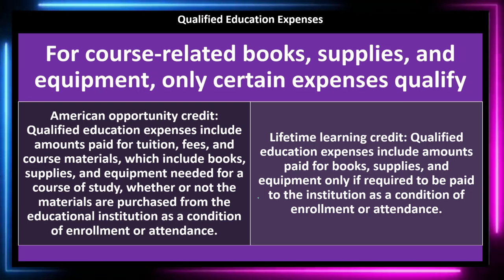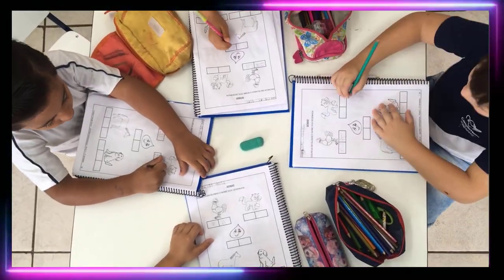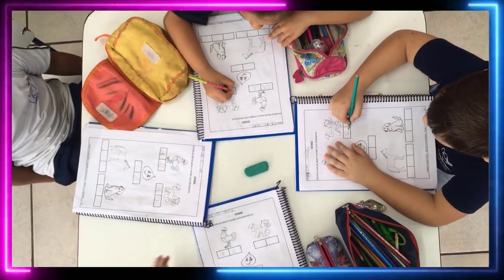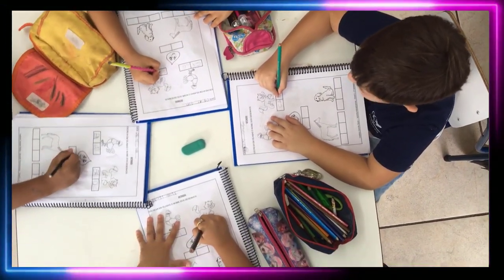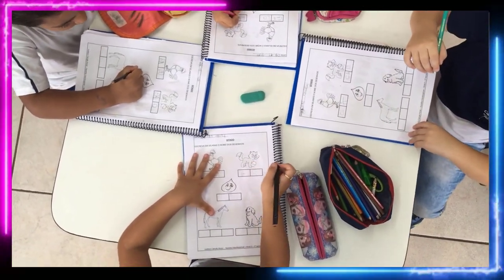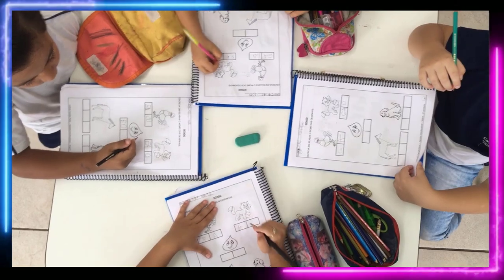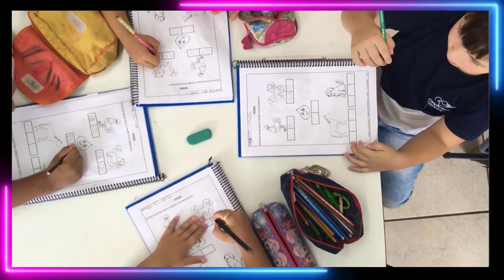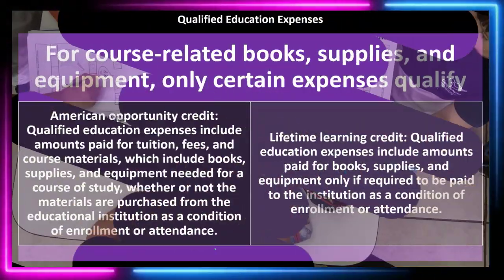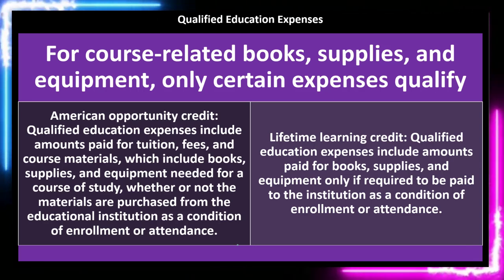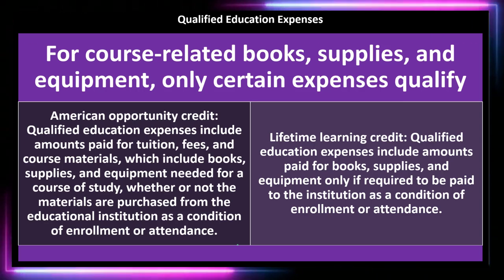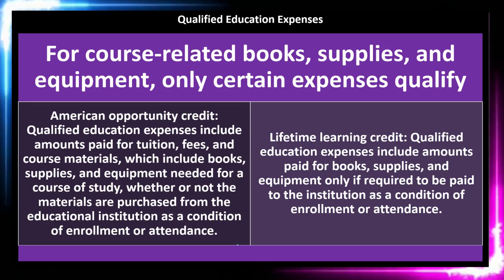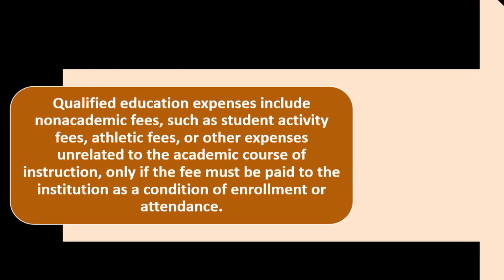The key difference: for the Lifetime Learning Credit, qualified educational expenses include amounts paid for books, supplies, and equipment only if they are required to be paid to the institution as a condition of enrollment or attendance. The American Opportunity Credit is more expansive — it covers course materials needed for study whether or not purchased through the institution.